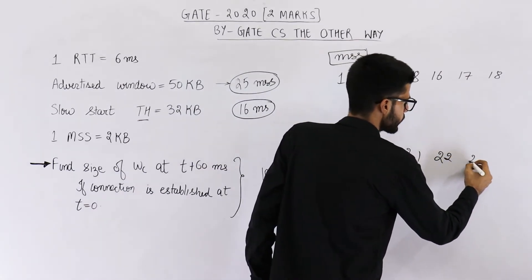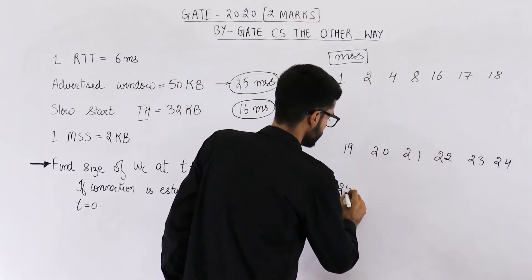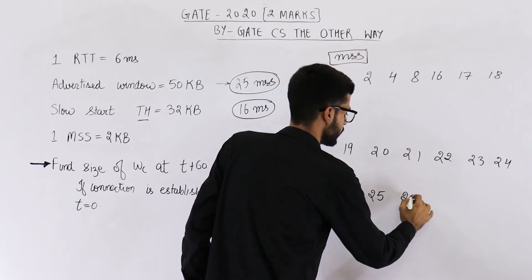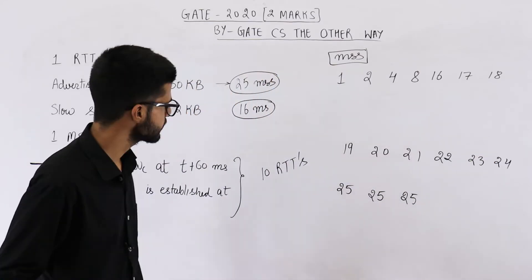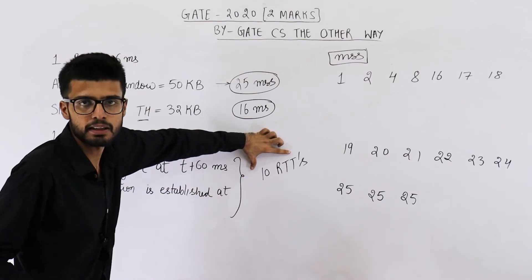So it will be 23, 24, then 25, then it will remain constant. Next time also it will be 25, again 25, and so on. Now they were asking, what will be the size of congestion window after 10 RTTs?